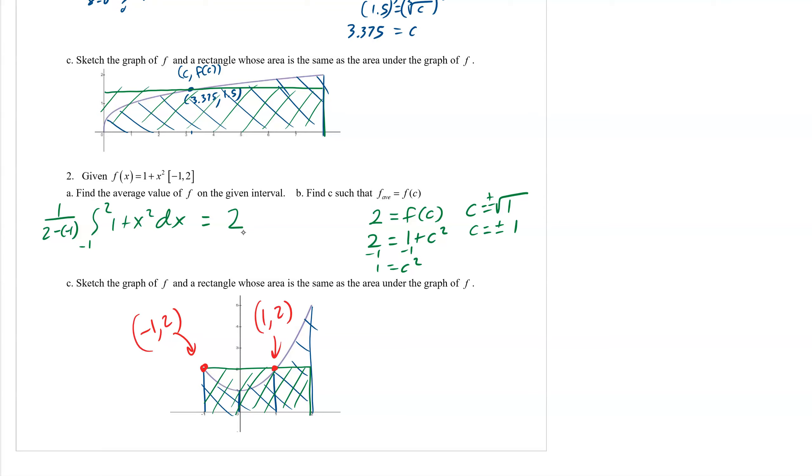We end up with -1 comma 2 and 1 comma 2. What's our c value? 1 and -1. There is an x value we can plug in that would be exactly the same as our average value.